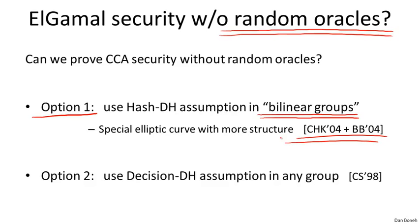The other alternative is to use groups where a stronger assumption called the decision Diffie-Hellman (DDH) assumption holds. This assumption actually holds in subgroups of Z_P*; in particular, in a prime-order subgroup of Z_P*, DDH seems to hold. In those groups we can build a variant of Elgamal called the Cramer-Shoup system that is chosen ciphertext secure under DDH without random oracles. This is a beautiful result, but it would take a couple of hours to explain, so I'll leave it to an advanced course. I point to a paper at the end of the module for further reading.